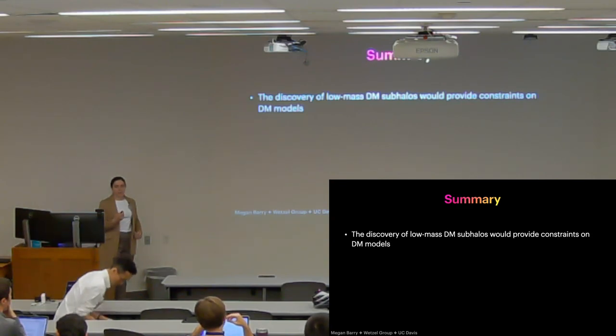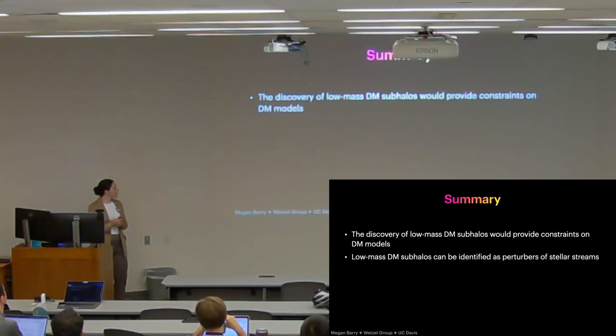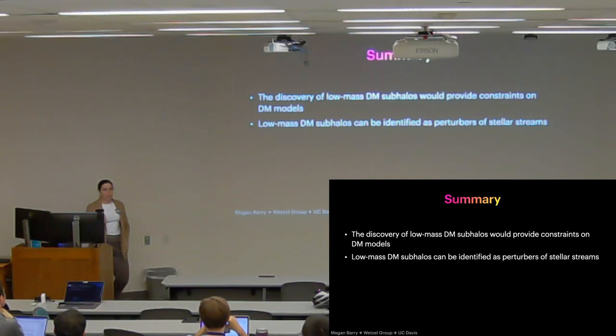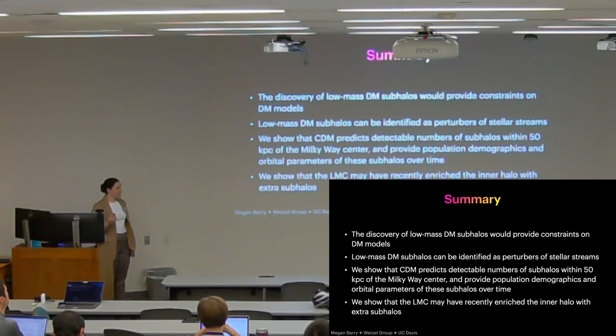So to summarize, if we can detect these dark subhalos, we can provide constraints on dark matter models. We can find these objects, among other ways, as perturbers of stellar streams. Our results show population predictions for different mass ranges of these objects over different distances and different redshifts. And we provide fits that you can use if you look up our paper, relatively recently published. And we show that the presence of the LMC should be a consideration when making predictions for these objects. Thank you.